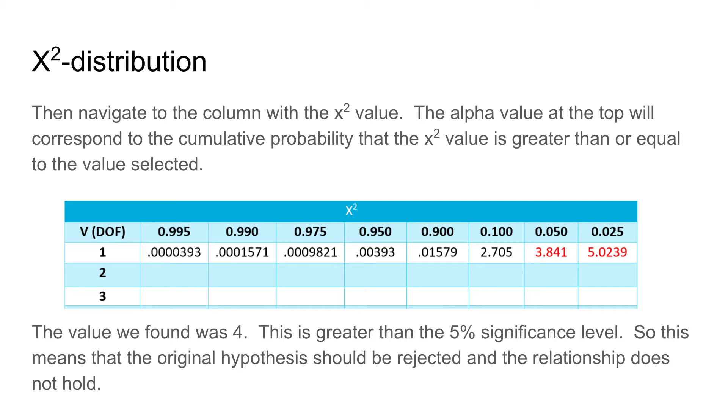If you do not, it is typically assumed that the relationship does not hold. In this case, our value was 4, which is greater than the 5% significance level of 3.841. This means our original hypothesis, where the passes and fails were equally weighted, should be rejected, and that relationship does not hold.